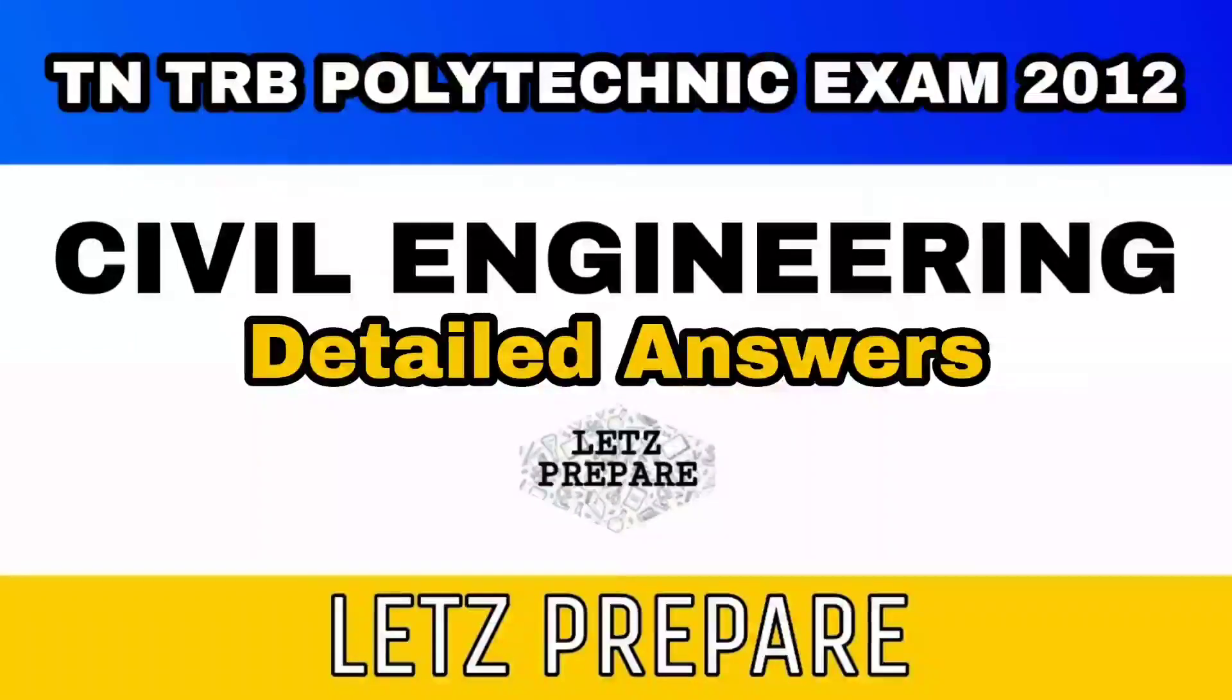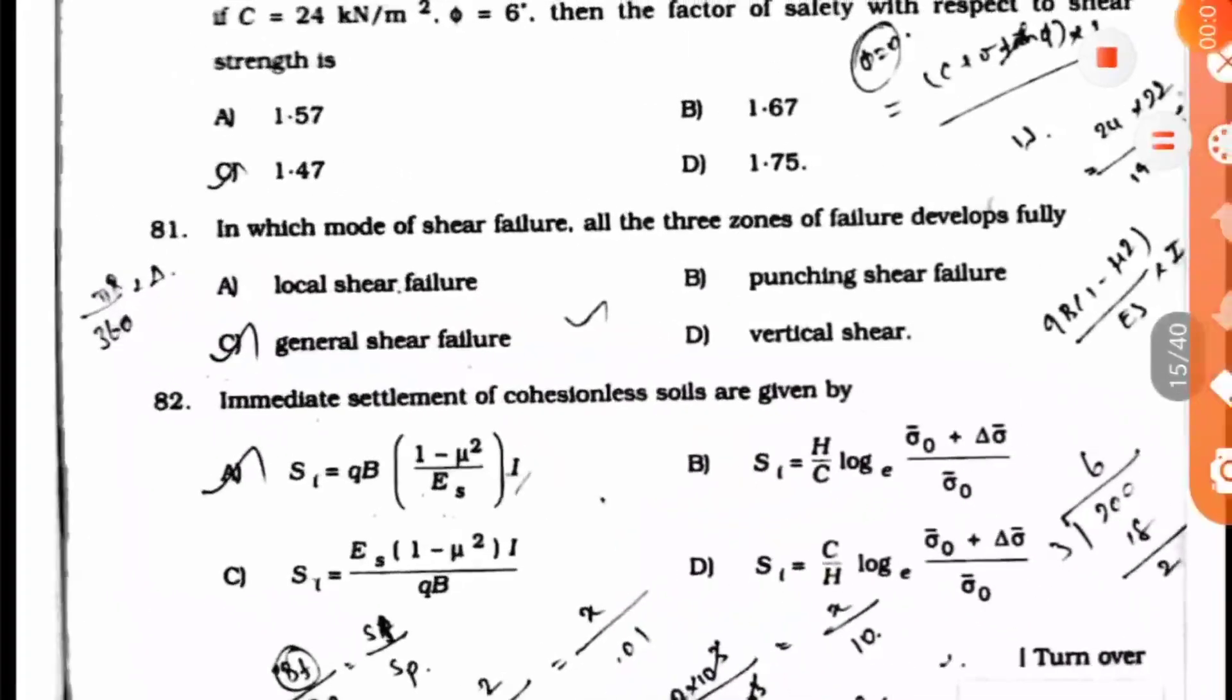Let's prepare on the TNTRB Polytechnic exam 2012 civil engineering question paper. Question 81: In which mode of shear failure do all the three zones of failure develop fully?